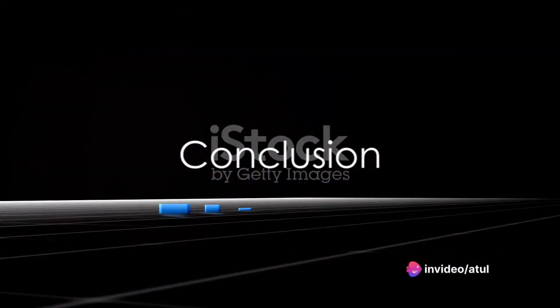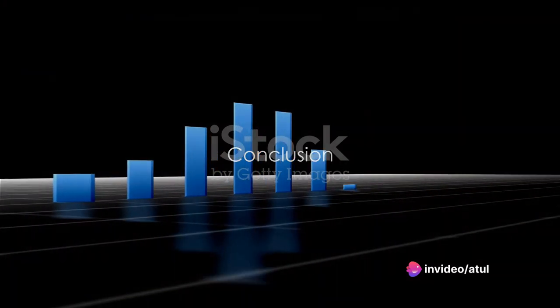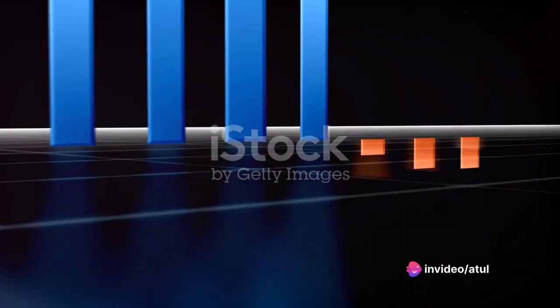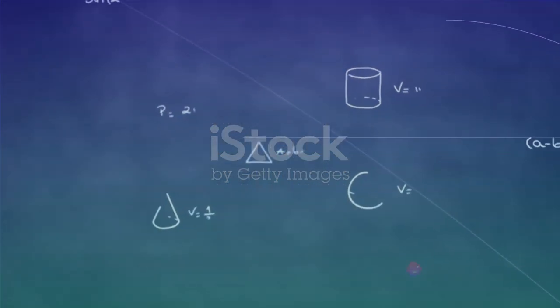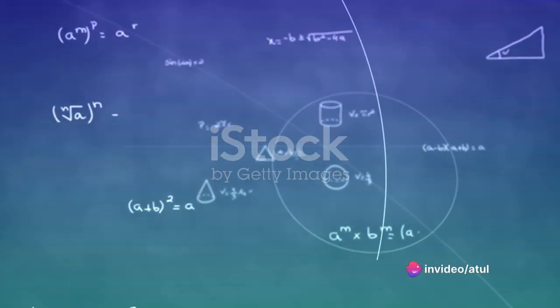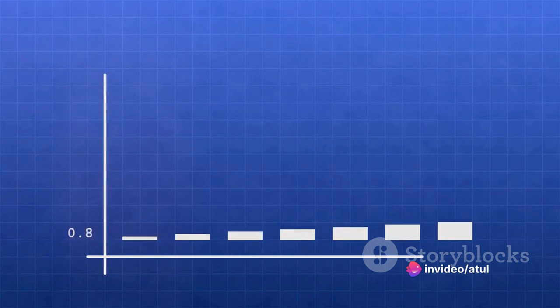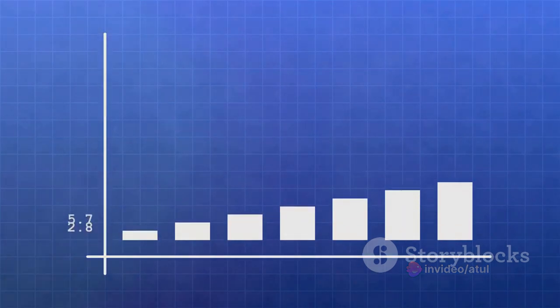As we conclude, remember the key points. Logistic regression is a method for predicting binary outcomes. It uses a logistic function to estimate probabilities. The process involves collecting data, designing the model, estimating coefficients, interpreting the results, and finally, using the model.